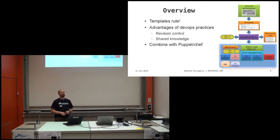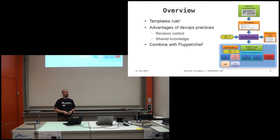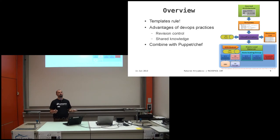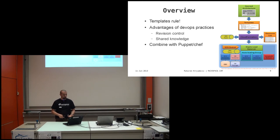Why is this interesting? The templates are text, so all the best practices that apply to any code artifact apply here. You can revision-control them, they can be shared — if multiple operations people are involved and one is away, you can read the template and understand the setup. This can also be combined with Puppet and Chef: you can specify an auto scaling group with four instances to start with, and specify that those instances use Puppet, so once they come up they will connect and get themselves configured.